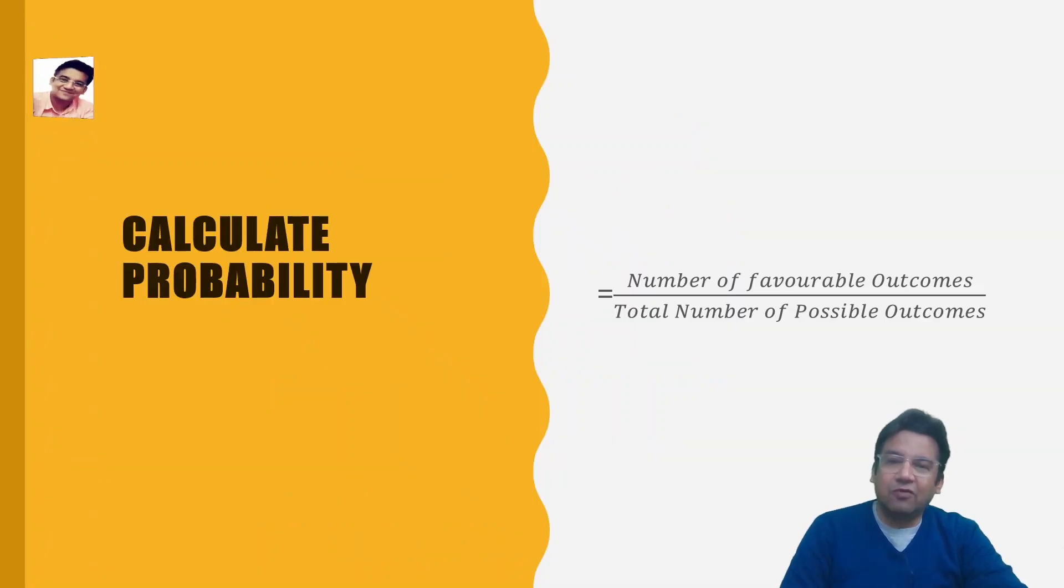The empirical formula for calculating the probability is given by the total number of favorable outcomes divided by total number of possible outcomes.